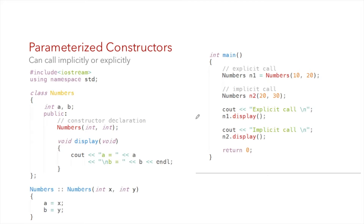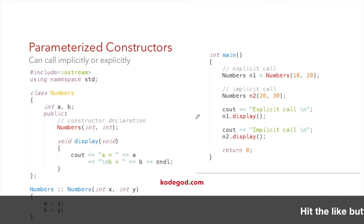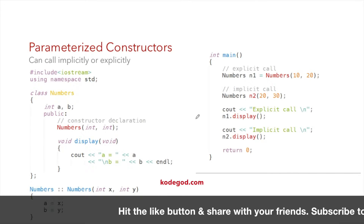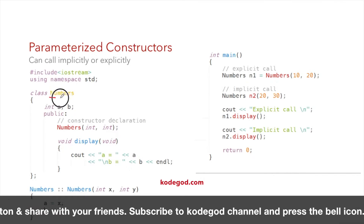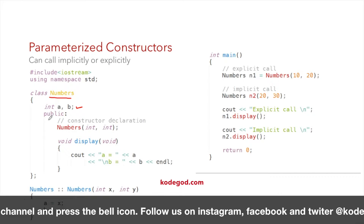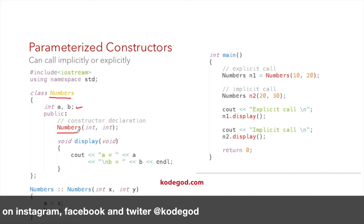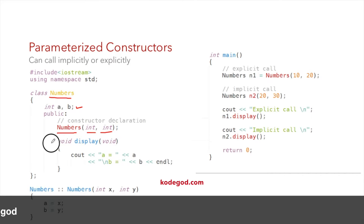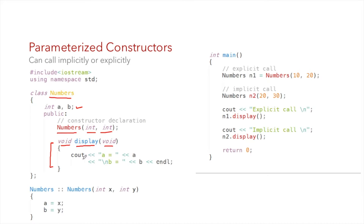Similar to parameterized functions, we can pass parameters to constructors. Calls to these constructors can be made implicitly or explicitly. I have a class 'numbers' with two integer variables a and b. In public, I have a constructor 'numbers' accepting two integer parameters, and a member function 'display' returning void that prints the private members a and b. Inside the constructor definition, the class name and constructor name are the same.